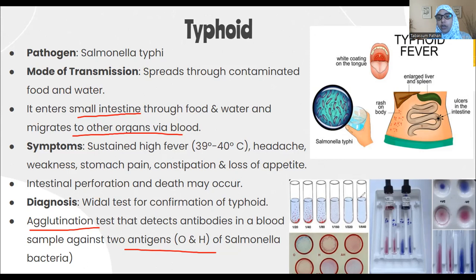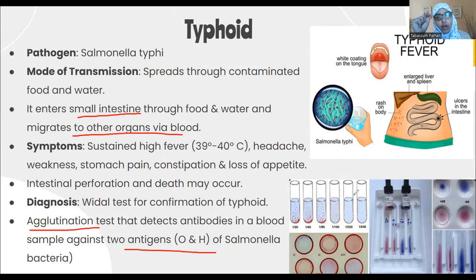Agglutination, which we discussed previously in the context of antigen-antibody reactions, is when antigen and antibody come together and form a clot. As seen in the picture, a centered dot indicates positive agglutination, while a diffuse pattern in the solution indicates a negative result.